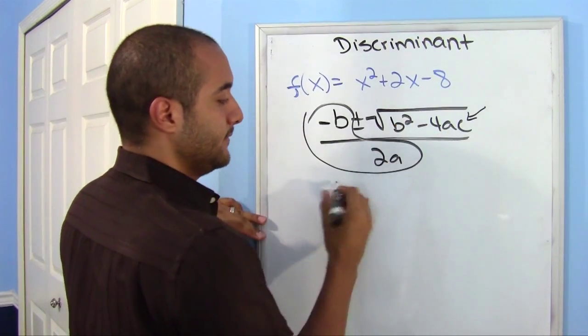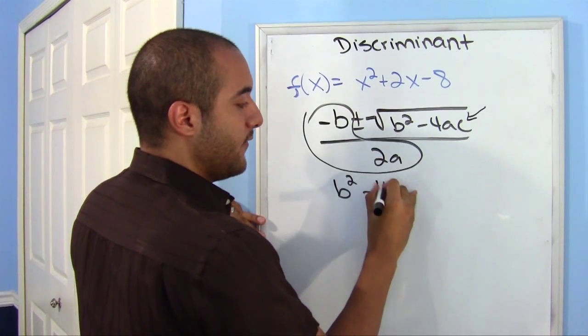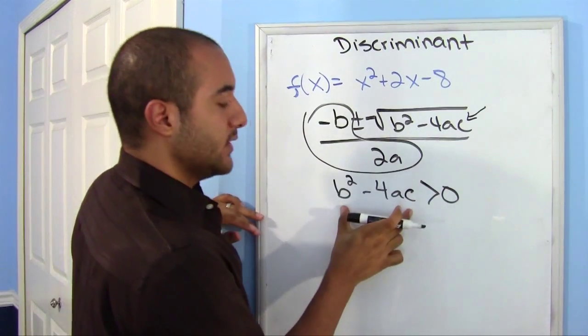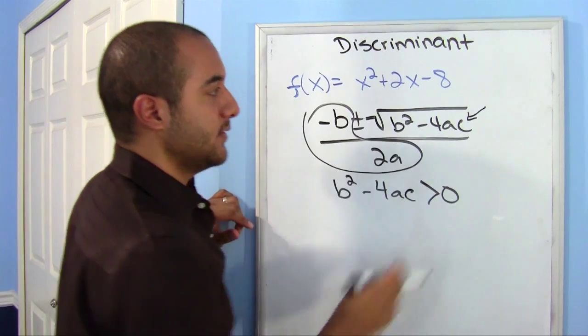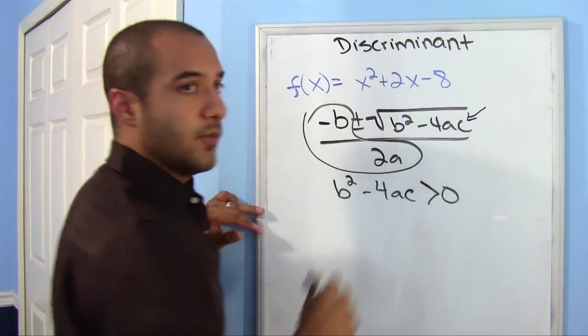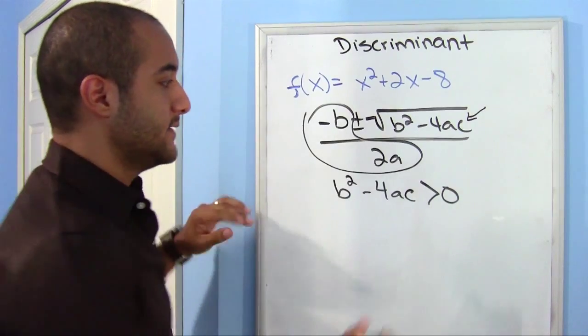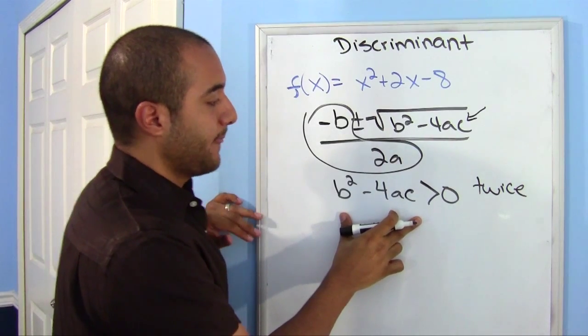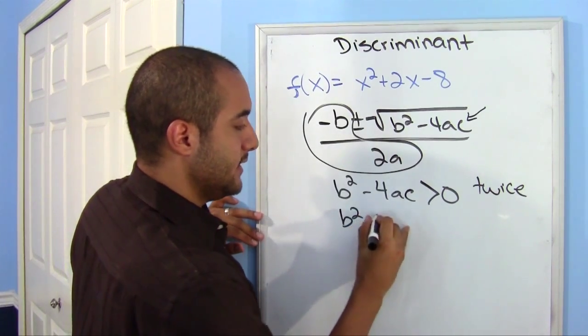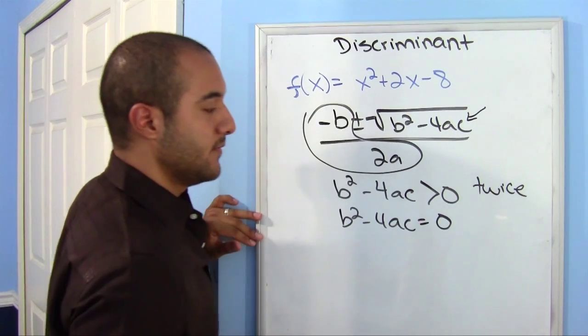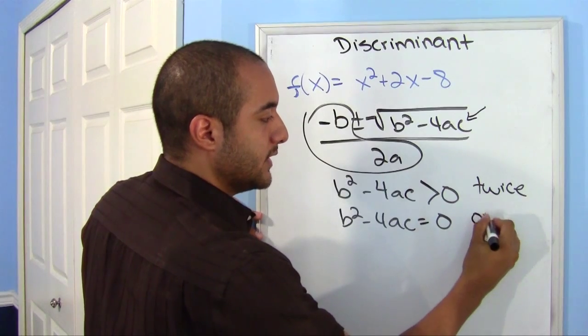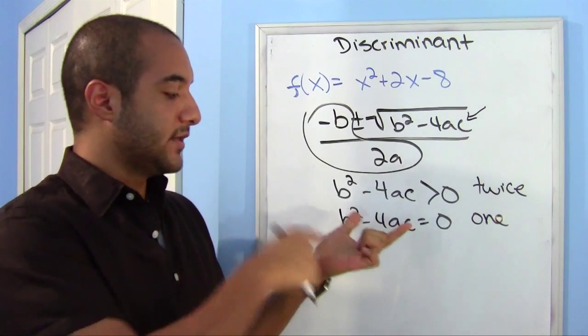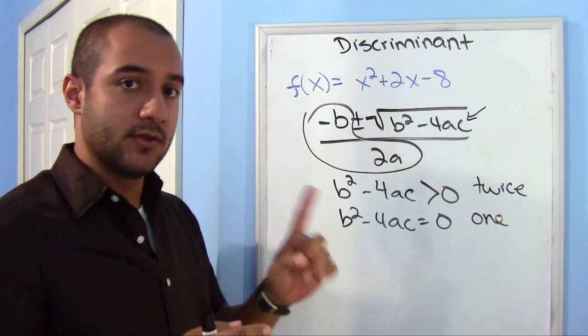So, in here, if b squared minus 4ac is greater than 0, if you work this out and you got it to be greater than 0, then your function will cross the x-axis twice. That lets you know that you're going to get two answers. If this is equal to 0, you're only going to get one answer. That means that your vertex is actually going to be touching the x-axis. That's the only way that it can touch it one time.